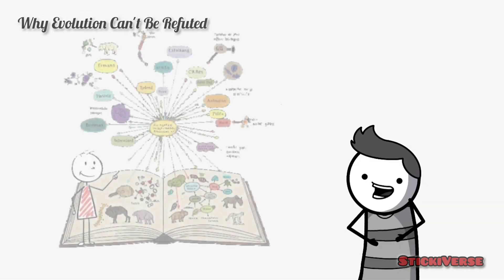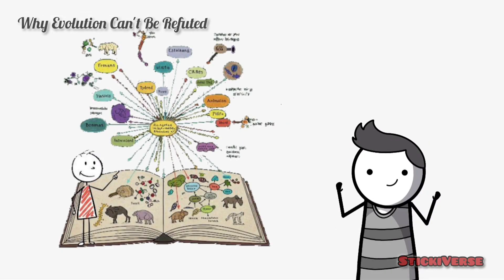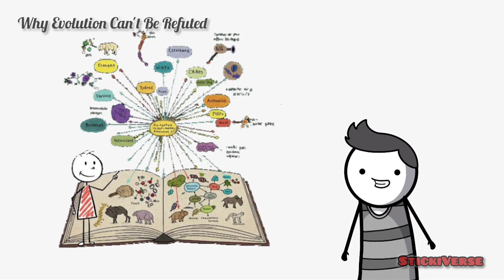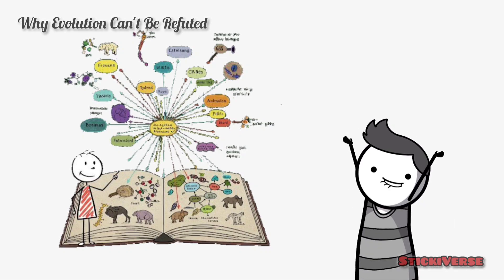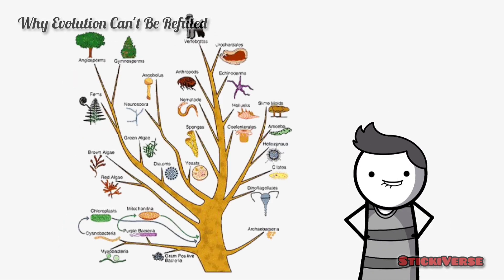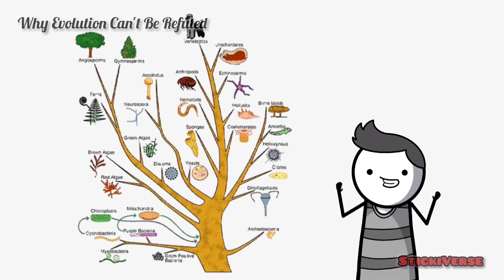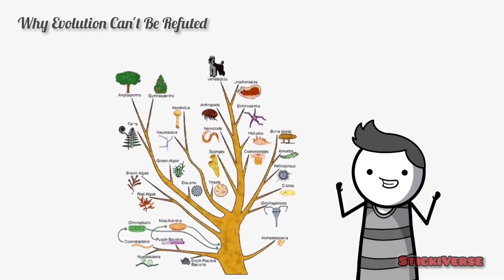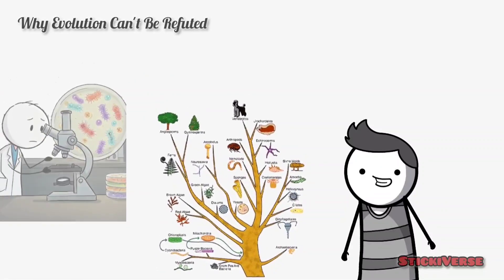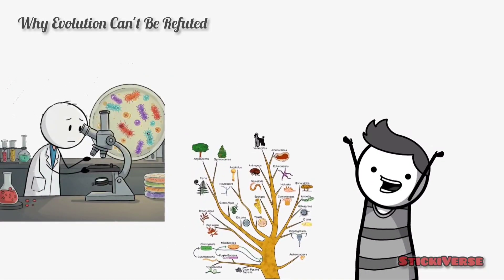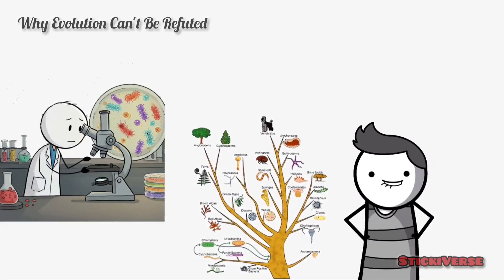So, why can't evolution be rejected? The supporting evidence is so overwhelming and consistent that it's almost impossible to reject. From the fossil record to genetic analysis, all aspects of life point to a common ancestor. Furthermore, evolution is still being observed in the real world, such as bacteria becoming resistant to antibiotic drugs.